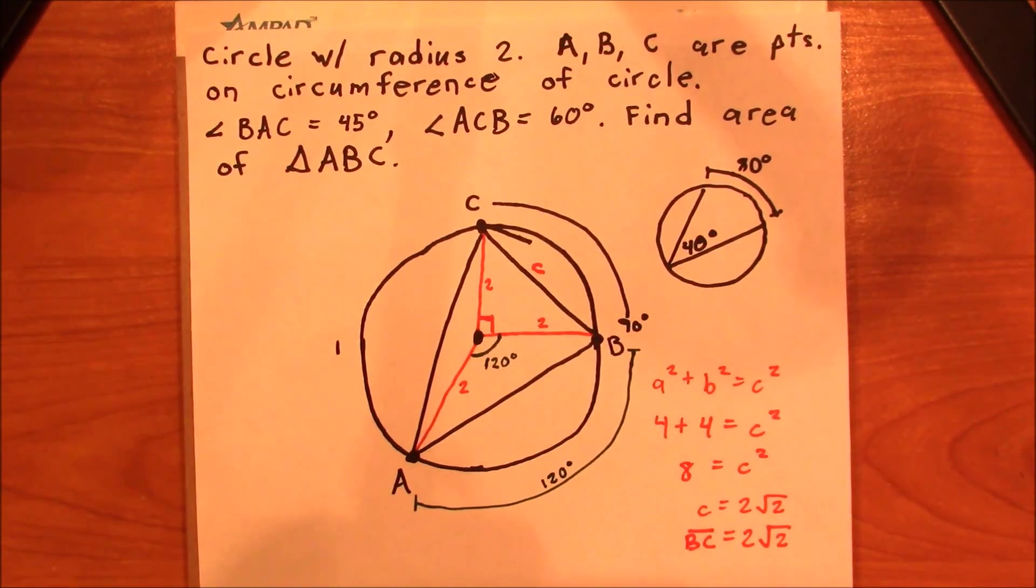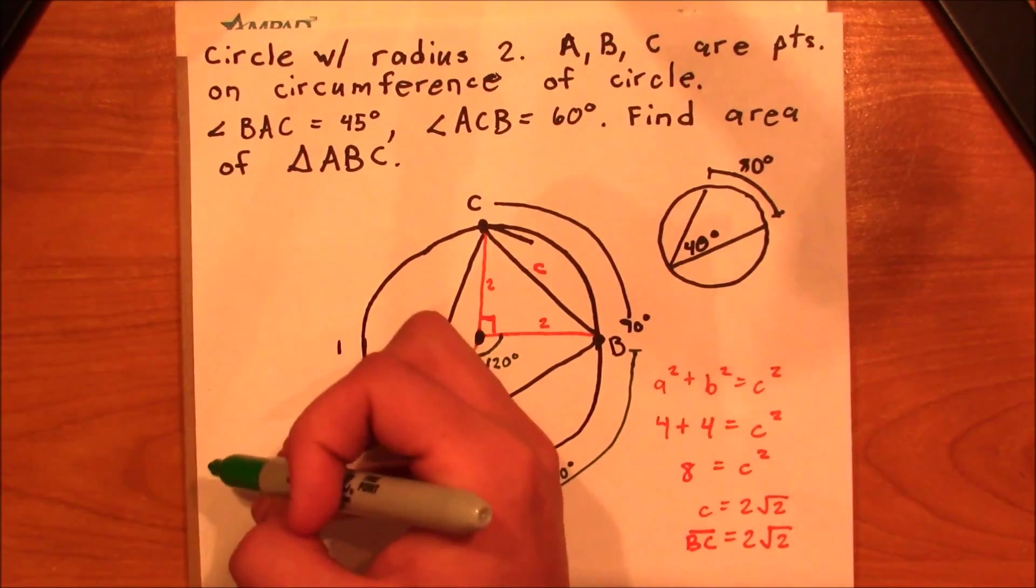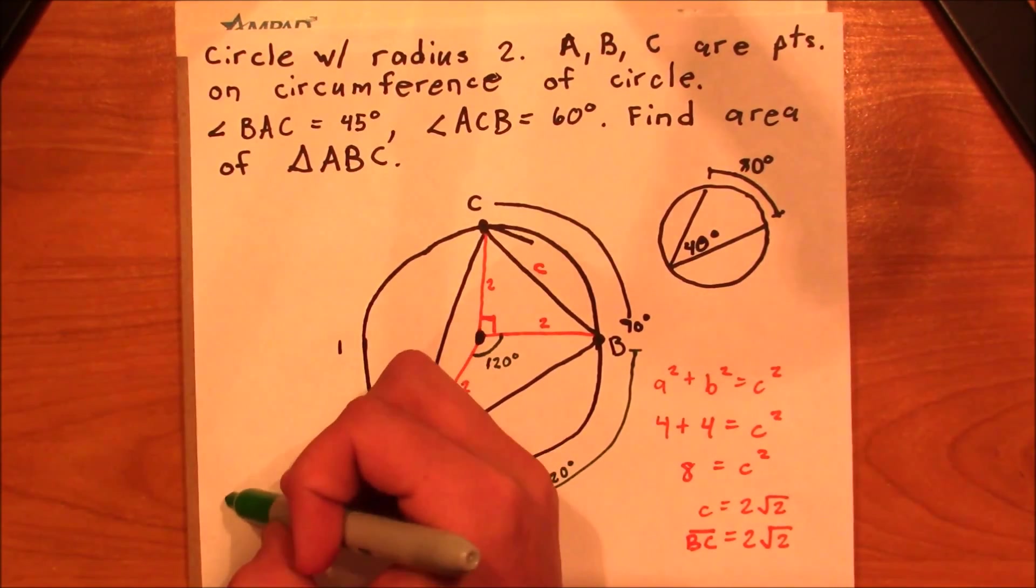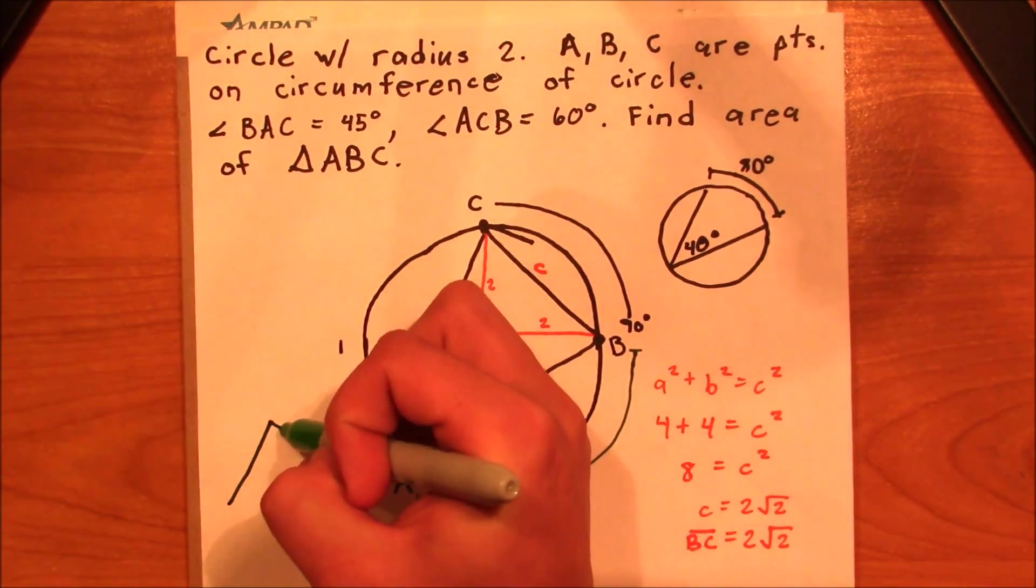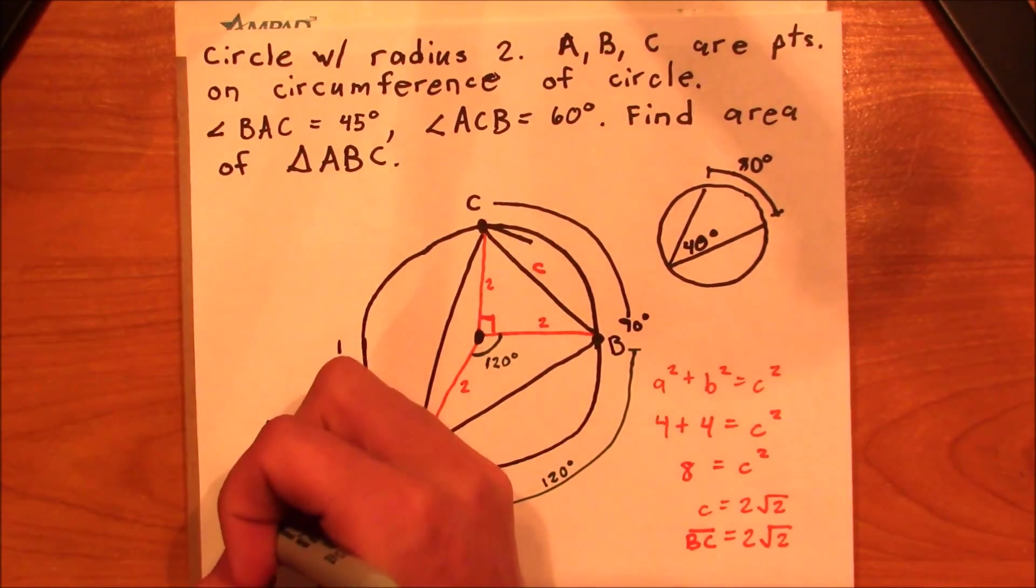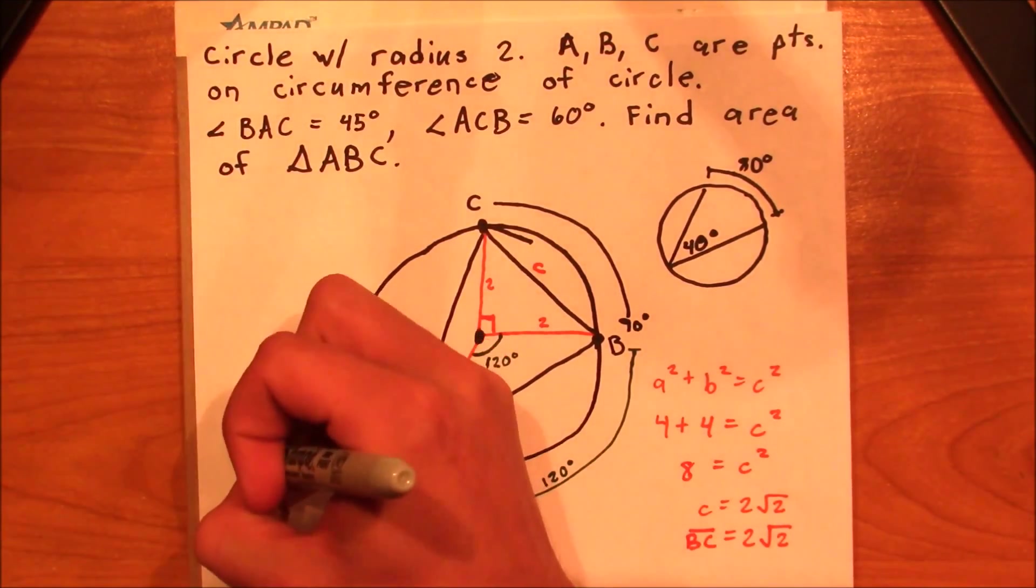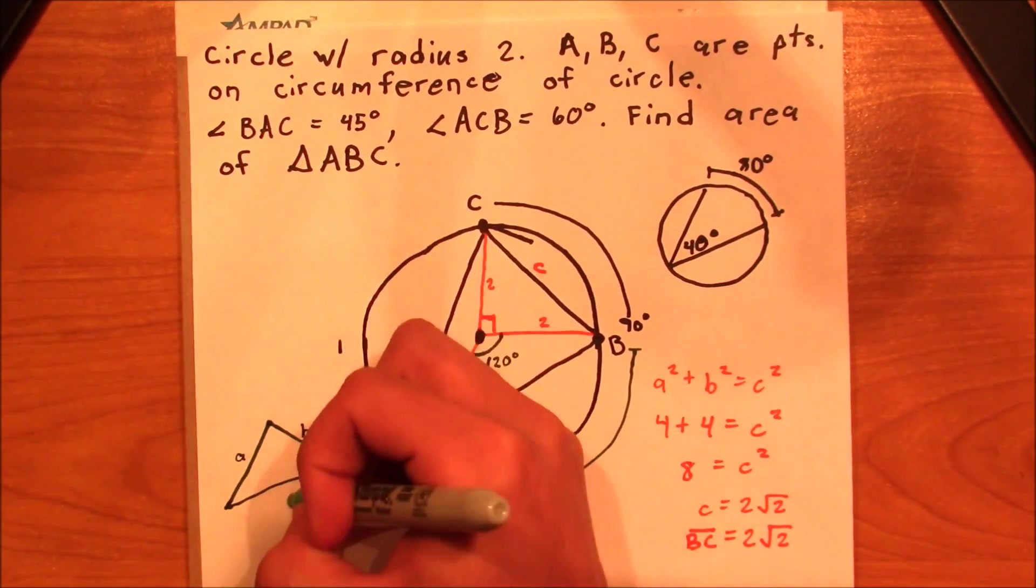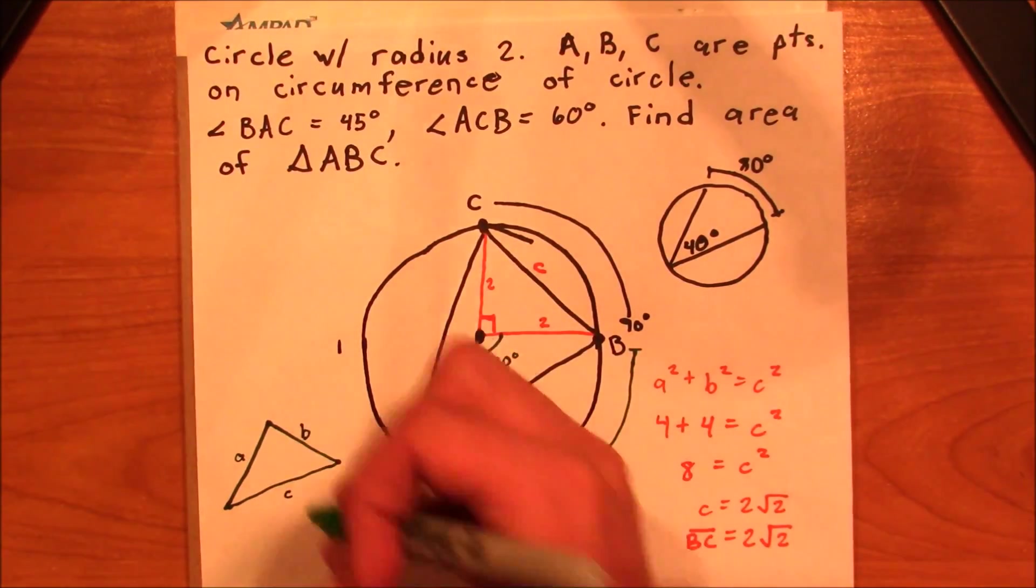Okay. So this one isn't as easy as the last one. We can't simply use Pythagorean's theorem. We have to use the law of cosines in order to figure this one out. And the law of cosines says for any triangle, let me just go ahead and draw a triangle over here just for demonstration, that has sides a, b, c, all lowercase, and angles a, b, c, all uppercase.